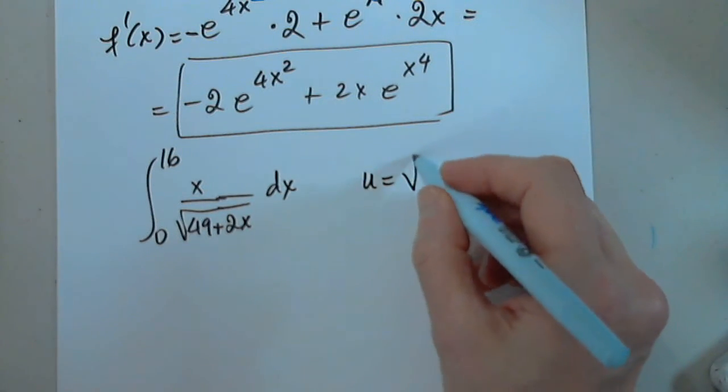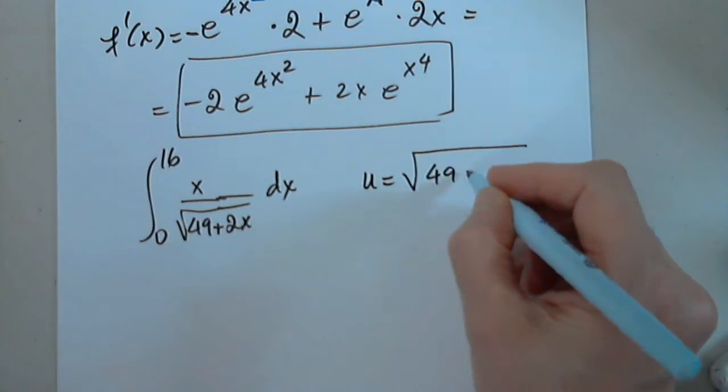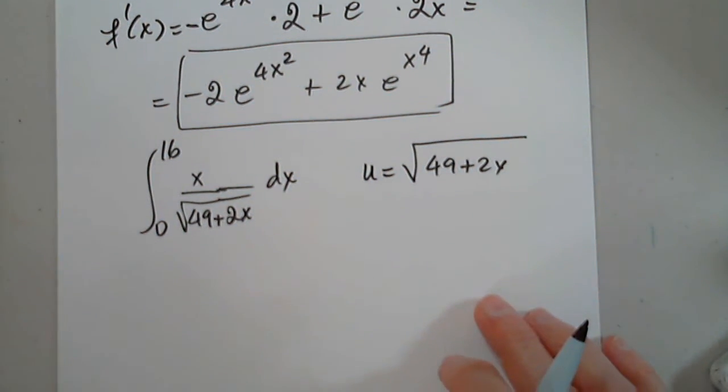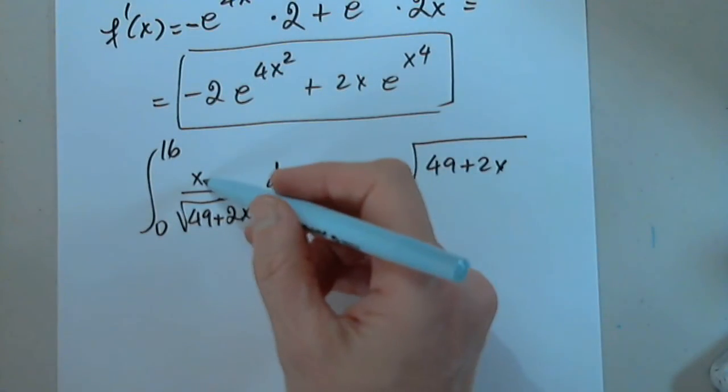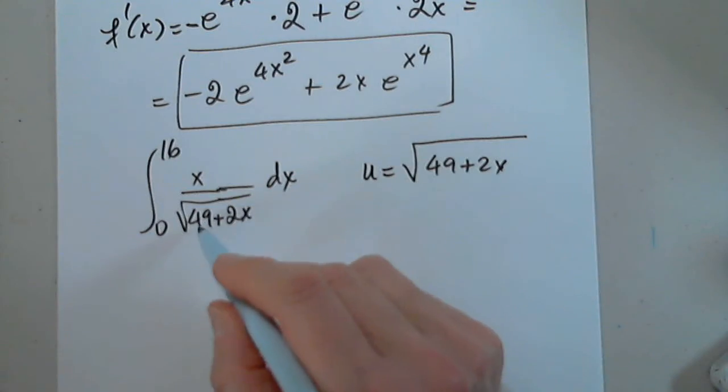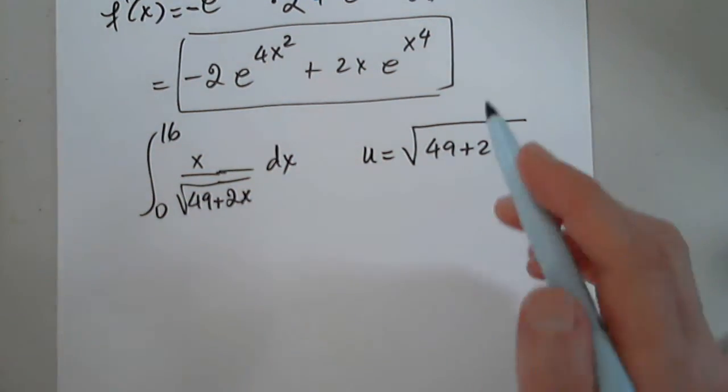This will help. The square root of 49 plus 2x. Don't write it just yet, because of this x at the top, I may be better off to do something else. We'll see in a moment.